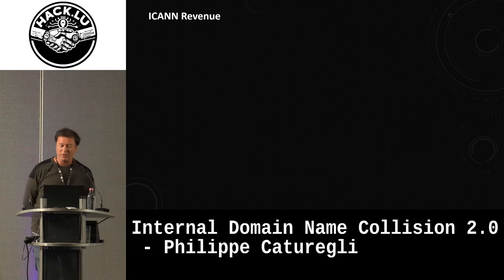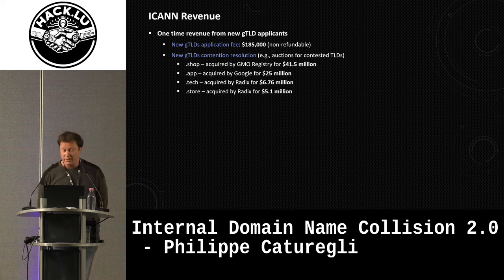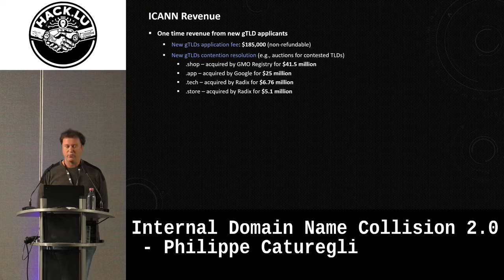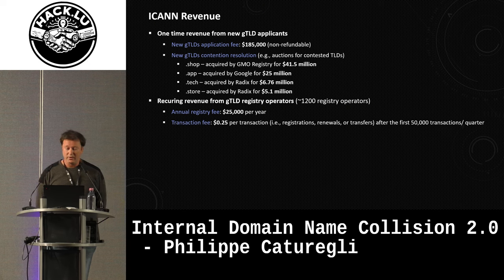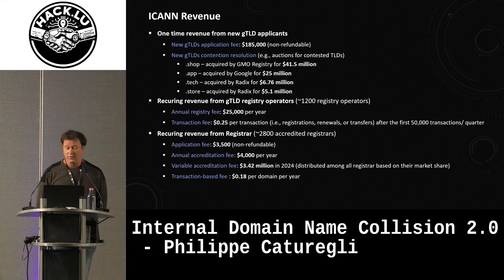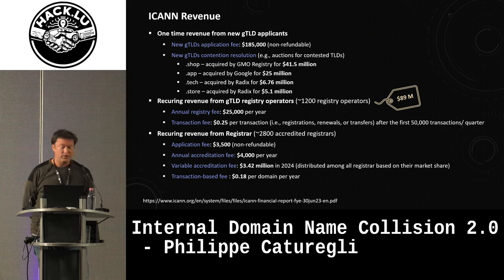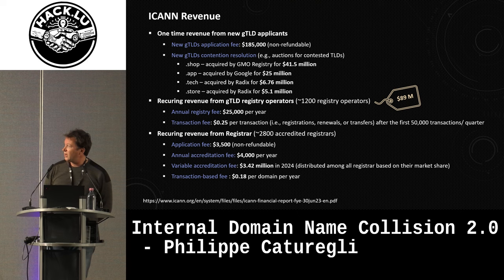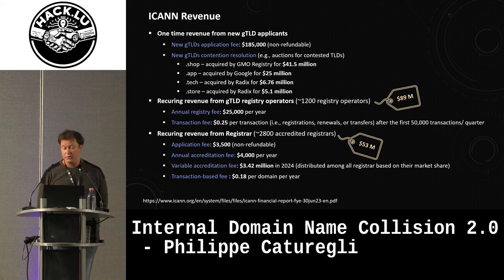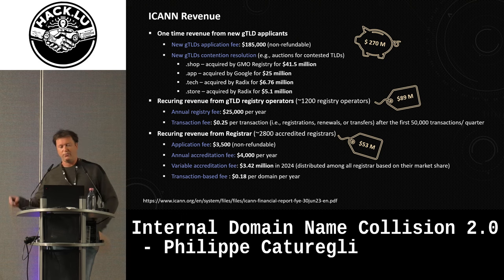ICANN is making a lot of money from applicants for new GTLDs. When you apply, you have to pay a lot. If more than two companies dispute a GTLD, ICANN will put it up for auction and make even more. On top of that, they collect recurring revenues — over 1,200 GTLDs now paying annually — and they also make money from registrars selling domains. Since ICANN is a non-profit, we can look at their financial report: last year they made $89 million in recurring revenue from GTLDs, plus $53 million from registrars, and created a separate fund of $270 million for special projects.